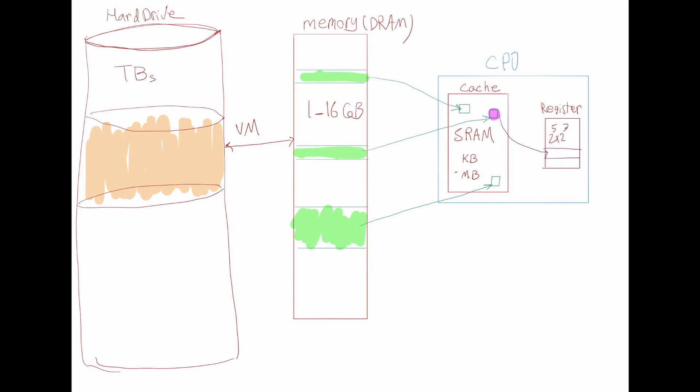If something is used all the time, it has to be in one of the registers. If it's used often, it should be in cache. If it's used occasionally, it should be in memory. If it's not used much at all, then it can go to the hard drive.